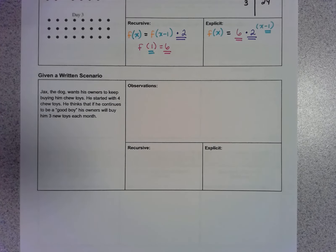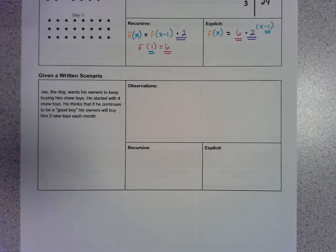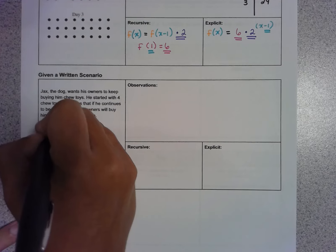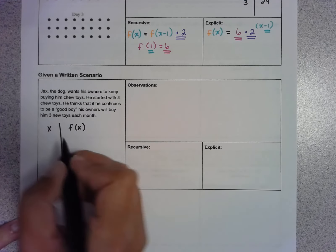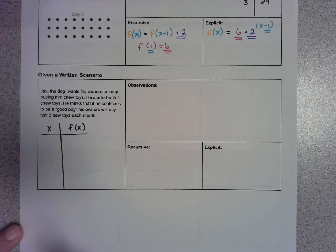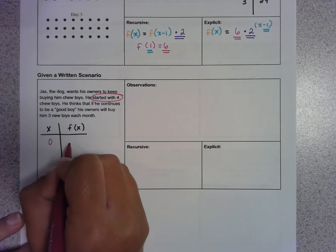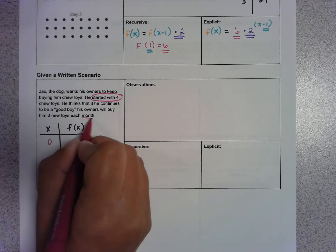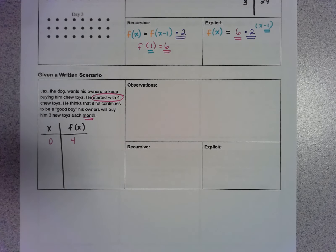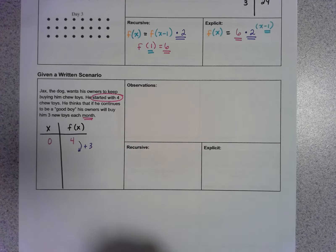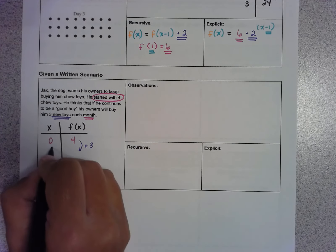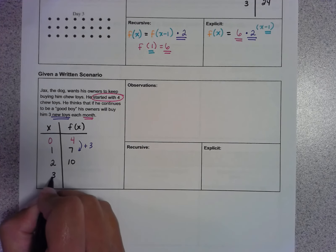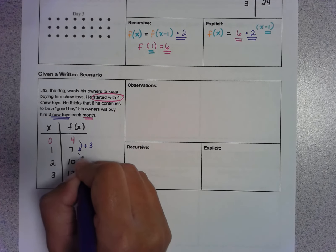Last, let's handle a written scenario. Jack's dog wants his owners to keep buying him chew toys. He starts with 4 chew toys and thinks his owners will buy him 3 new chew toys each month. Before doing anything else, I'll make a table. He starts with 4 at month 0, then 7 at month 1, 10 at month 2, 13 at month 3 — using that plus-3 pattern to fill in the table.